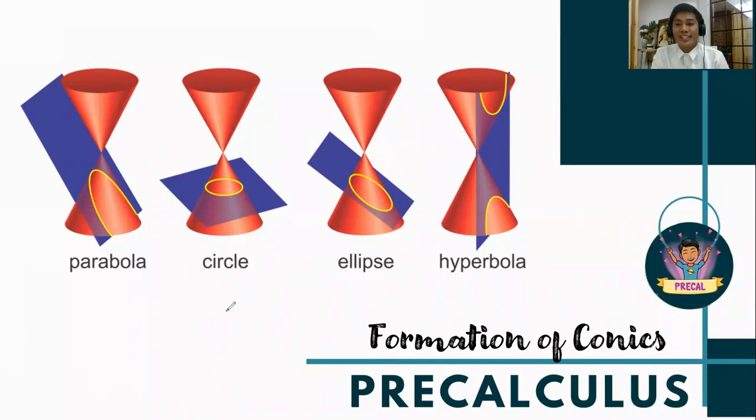Generally, there are three types of conics: the ellipse, the parabola, and the hyperbola. But a circle is part of the conics because a circle is a special type of ellipse.